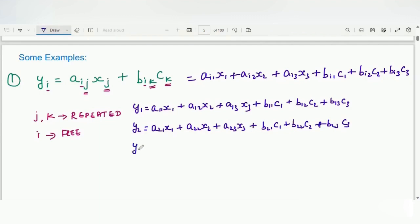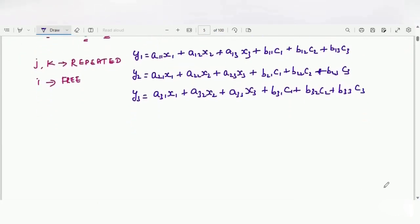Similarly, y_3 = a_31 x_1 + a_32 x_2 + a_33 x_3 + b_31 c_1 + b_32 c_2 + b_33 c_3. We can observe that we can put this one in the matrix form as [y] = [A][x] + [B][C]. This is the explanation of the above example.